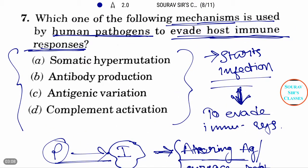So there is the option. Option A says somatic hypermutation - this is not. B says antibody production - no.